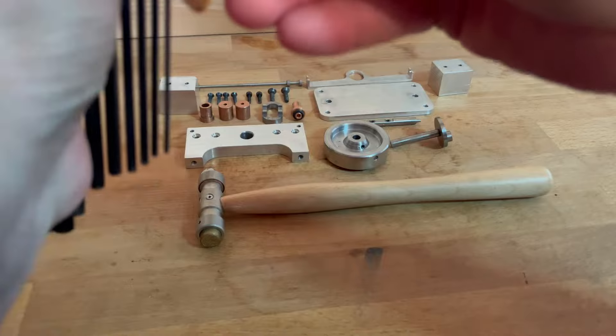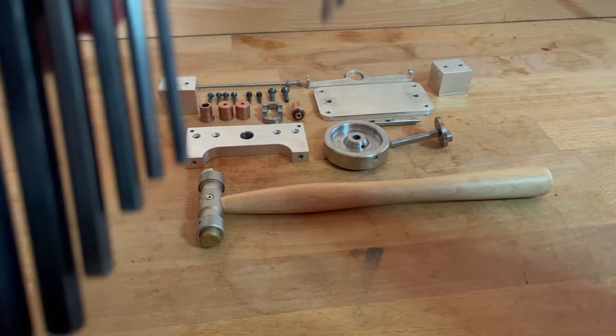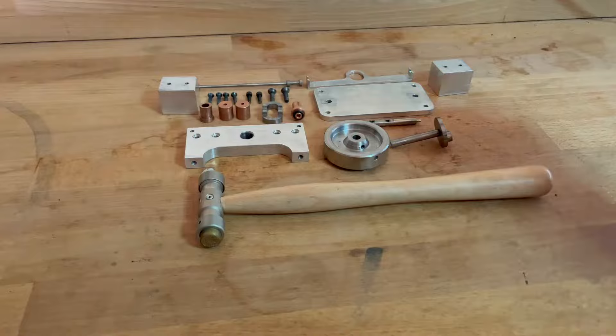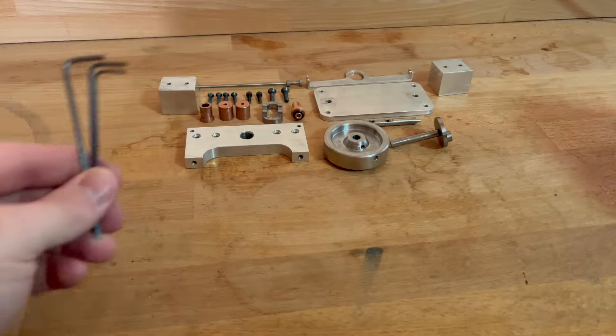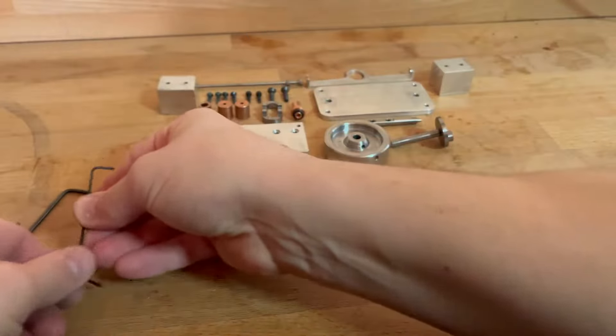First, we're going to find the three allen keys that we need, which is a two and a half, a two, and a one point five, and we'll put them to the side. We don't need the hammer at the moment, so we're going to put that over there.